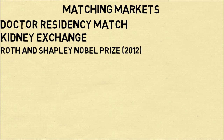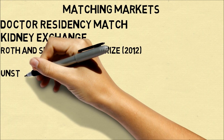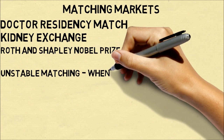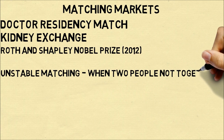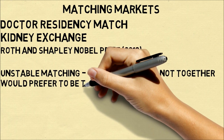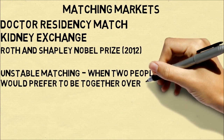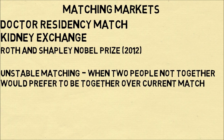So, how can matching markets be difficult? Here's an example. You can have what's known as an unstable matching. This happens when two people who are not matched together would prefer to be together over their current match. This would cause a problem because those two people would just break off from their current match and be together, and that could lead to all sorts of consequences.